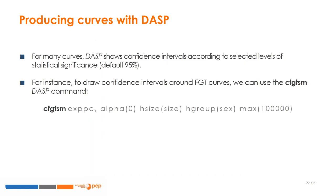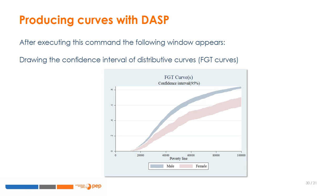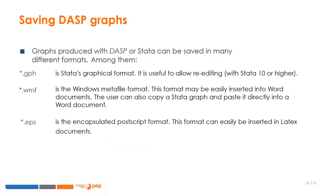DASP also makes it possible to draw many curves with their confidence intervals. By default, the level of statistical significance is set to 95%, but this can be changed. For example, the 'cfgtsm' command draws FGT curves together with their confidence intervals. Graphs produced with Stata and DASP can be saved in different formats: those saved in Stata's graphical format can be easily edited, graphs in the Windows Metafile format can be easily inserted into Word documents, and graphs in encapsulated PostScript format are particularly suitable for insertion into LaTeX documents.